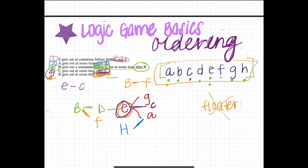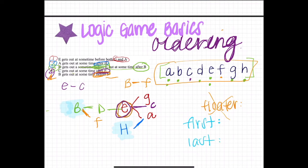Before going to the questions, consider key relationships. What letters could go first? Look for variables with nothing to their left — that's B and H. What could go last? Look for variables with nothing to their right — those are F, G, C, and A.